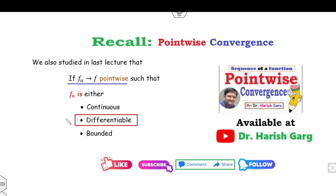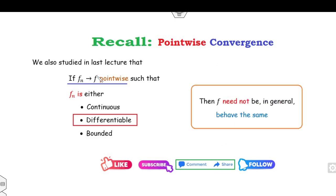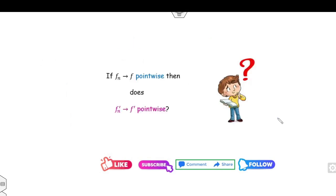As discussed in the previous lecture, if fn converges to f pointwise and each fn is differentiable, then f may or may not be differentiable. The question is: does this result hold if we replace pointwise convergence with uniform convergence? That is the target of today's lecture.